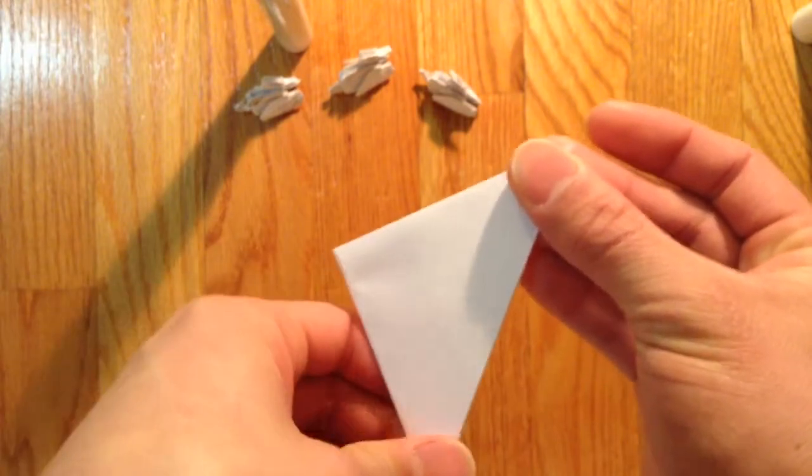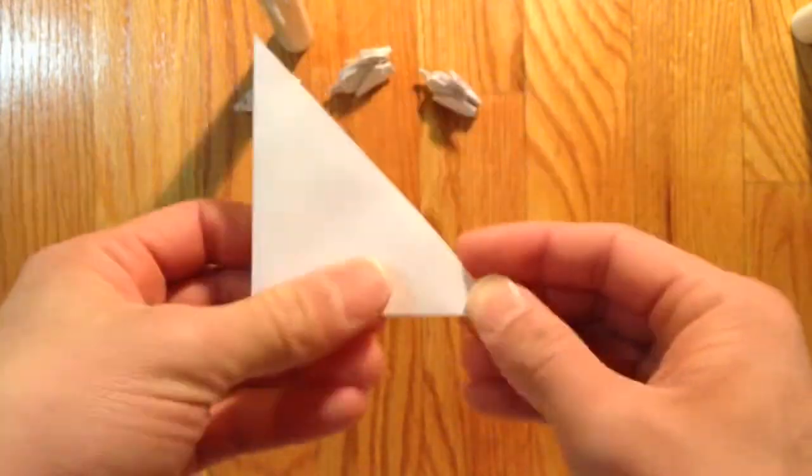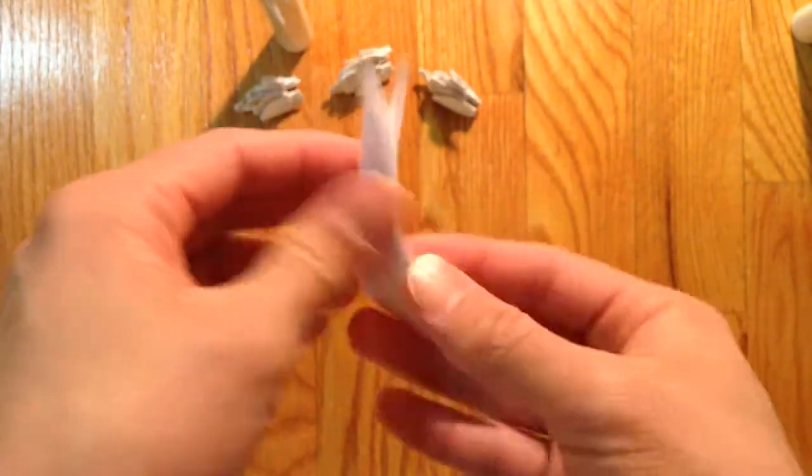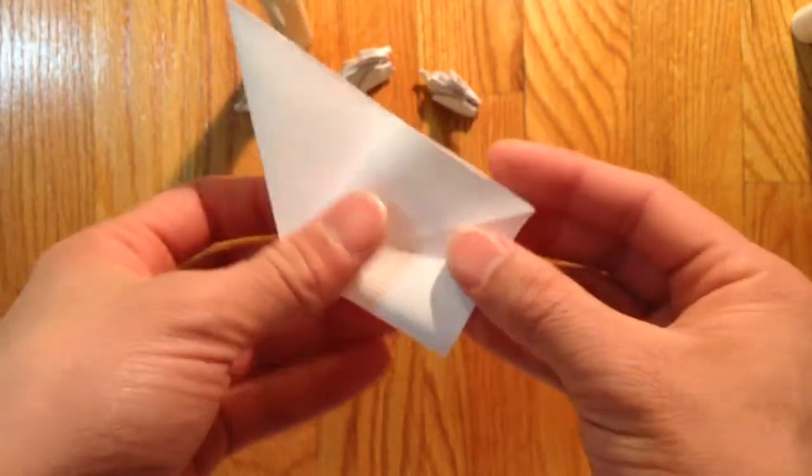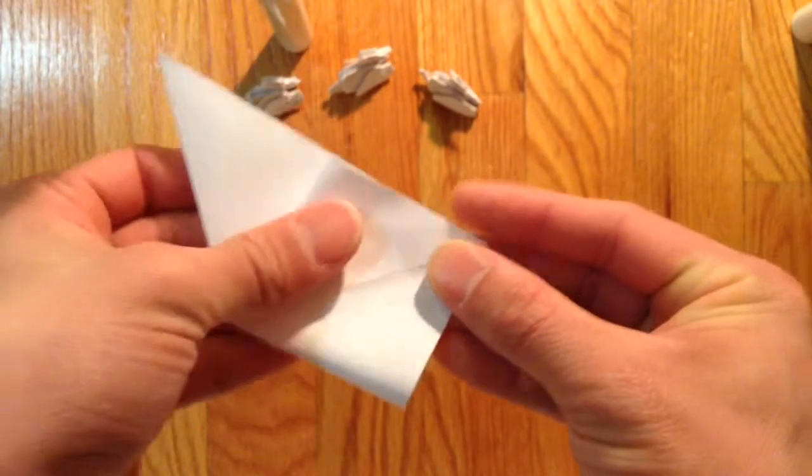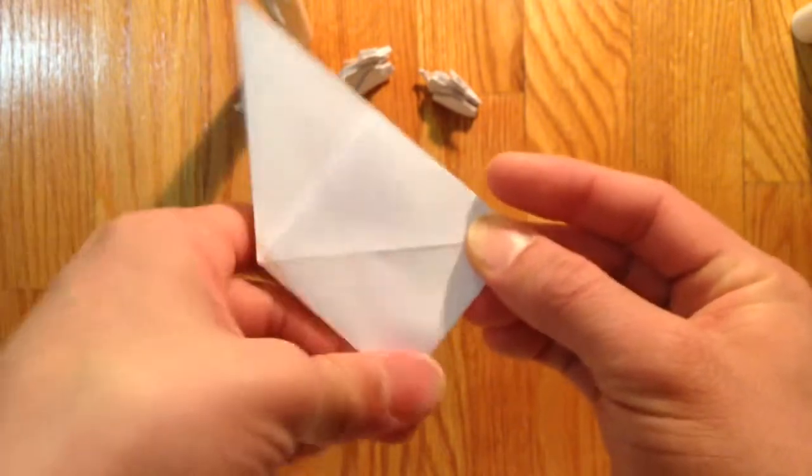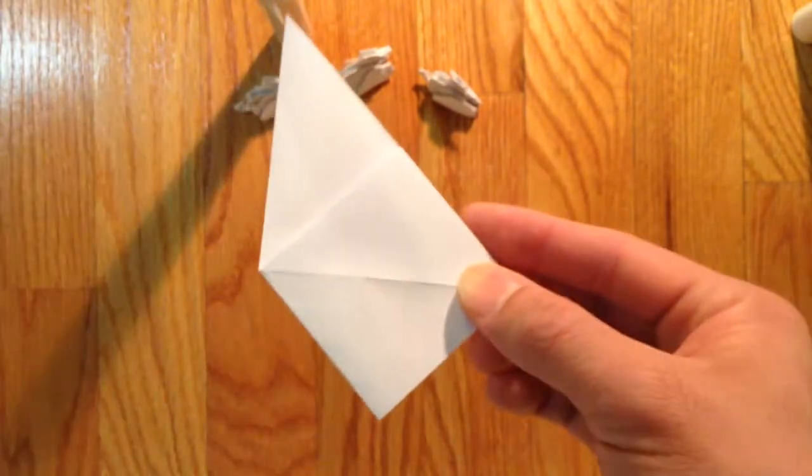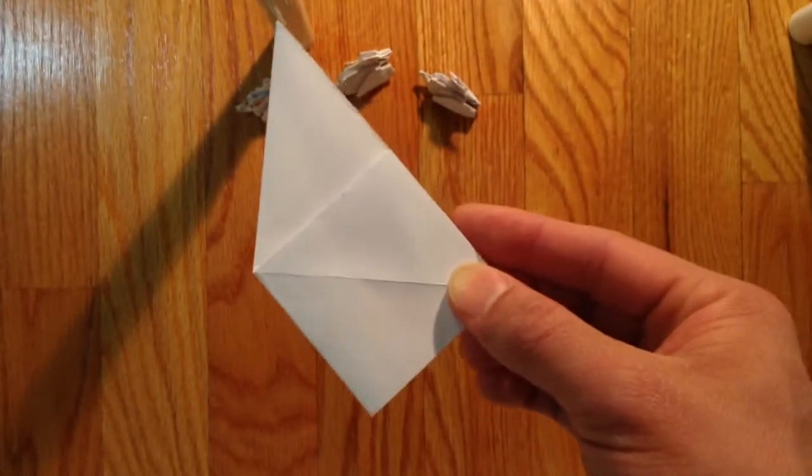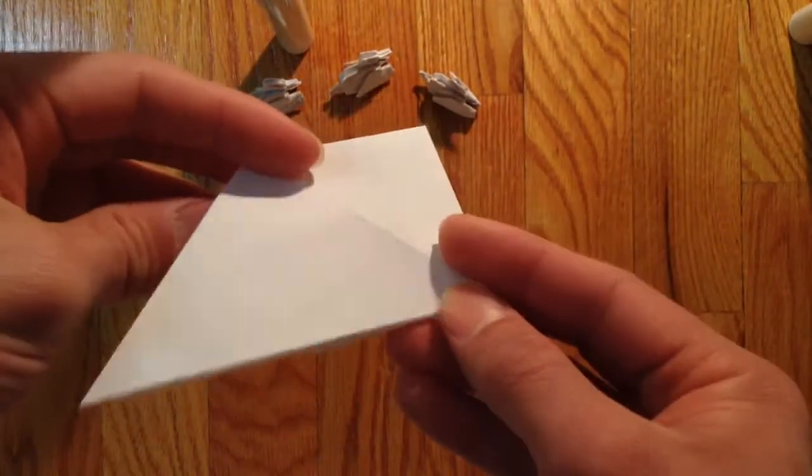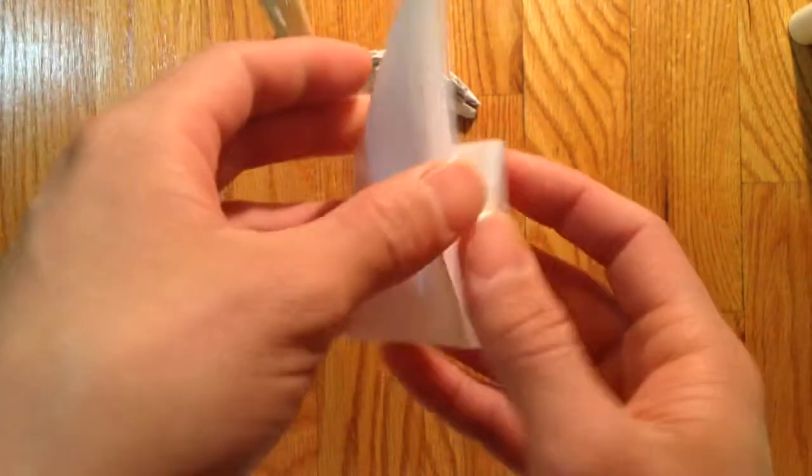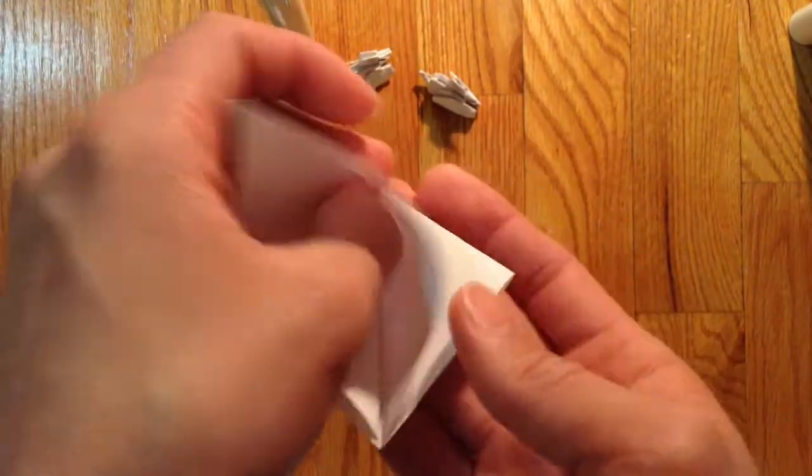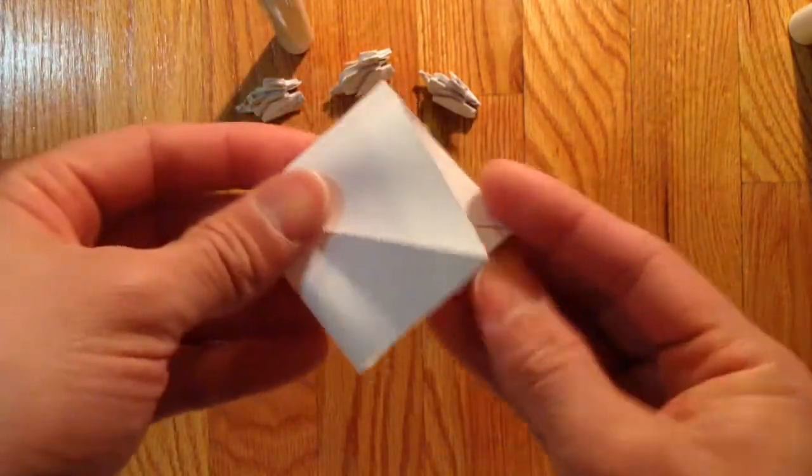Then you open this pocket and fold that down. Then you fold the same thing on the other side, so make a crease on the other side there, and you open this pocket and fold that down.